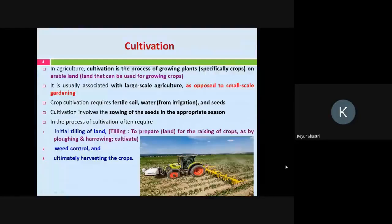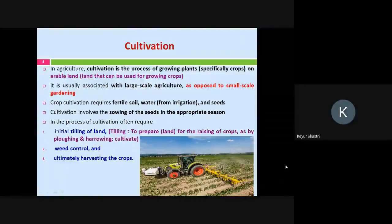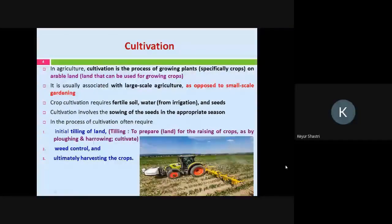What is cultivation? In agriculture, cultivation is the process of growing plants. Here, I am specifically referring to crops — it can be food crops, it can be vegetables, it can even be fruits on an arable land.